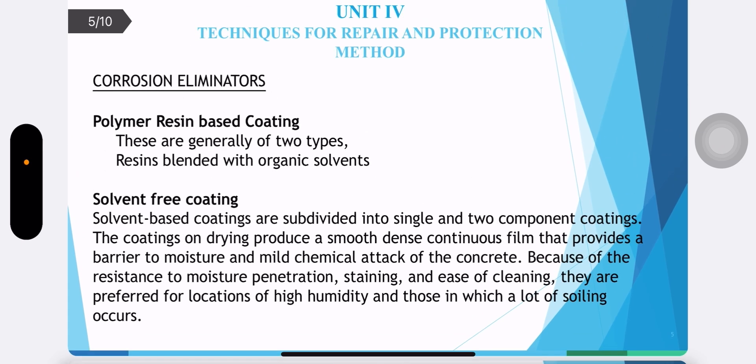Polymer resin based coatings — there are generally two types: resin balanced with organic solvent, and solvent-free coating. Solvent-based coatings are subdivided into single and two-component coatings. The coatings on drying produce a smooth, dense, continuous film that provides a barrier to moisture and mild chemical attack of the concrete.